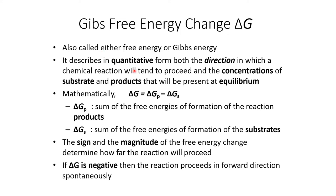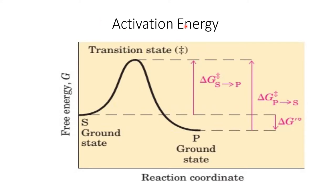Gibbs free energy change, delta G, also called Gibbs energy, describes in quantitative form both the direction in which the chemical reaction will tend to proceed and the concentration of substrate and product that will be present at equilibrium. Mathematically, delta G equals delta G of products minus delta G of substrates, where delta G of products is the sum of free energy of formation of reaction products and delta G of substrates is the sum of free energy of formation of substrates. The sign of delta G determines how far the reaction will proceed. If delta G is negative, the reaction proceeds in the forward direction and it is spontaneous.